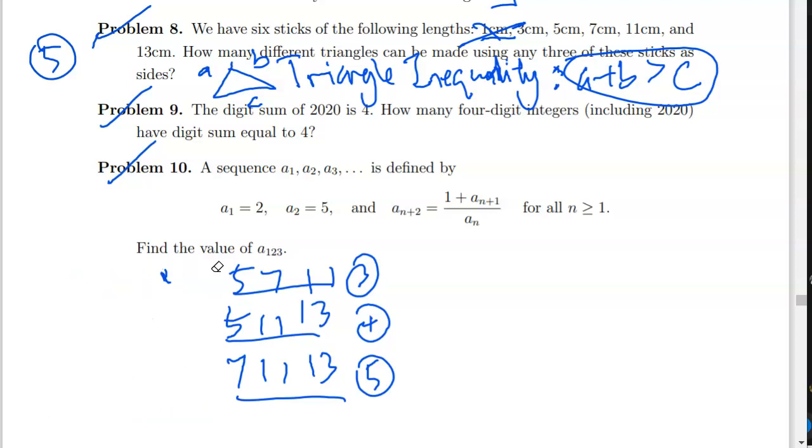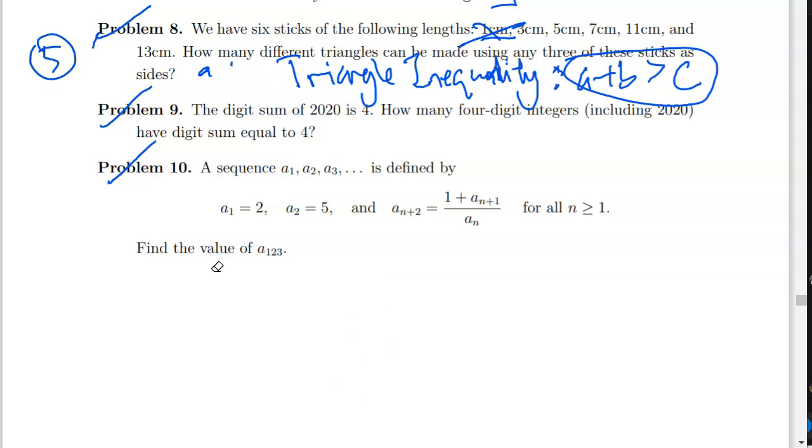So because I will be making some space for problems nine and ten. So while I erase, maybe you can read problems nine and ten. So now we have problem nine. The digit sum of 2020 is four, because two plus two plus zero plus zero is four. And how many four-digit integers, including 2020, have digit sum equal to four? So four-digit integers, normally we will say positive integers.